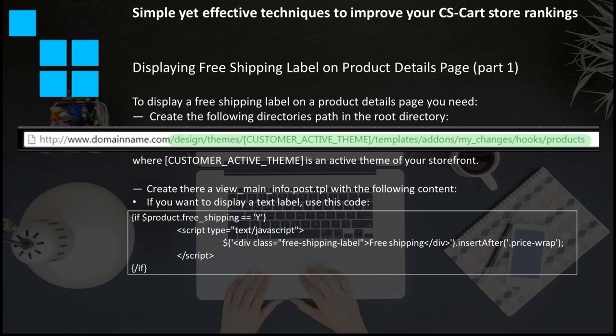The fourth issue is about displaying a free shipping label on product detail pages. If you have any product in your store that has free shipping, you can display a message about this right on the product page. Here you can find detailed instructions on how to do it in the form of text or picture — you can display any message about free shipping on your store. You will need a programmer to do this, and here is the instruction you can give them.